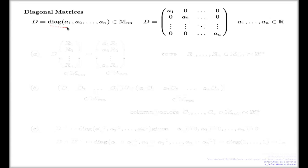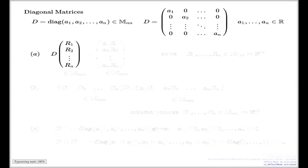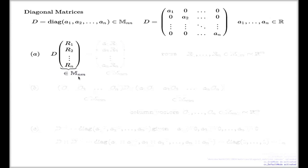I'd like to discuss what happens when you multiply another matrix by a diagonal one — like the shortcuts we discussed with multiplication by the standard basis vectors. In part A, I'd like to discuss what will happen if you multiply this diagonal matrix by any matrix. This is my way to write a matrix of size N times M, where R1, R2, R3 represent the rows of that matrix.